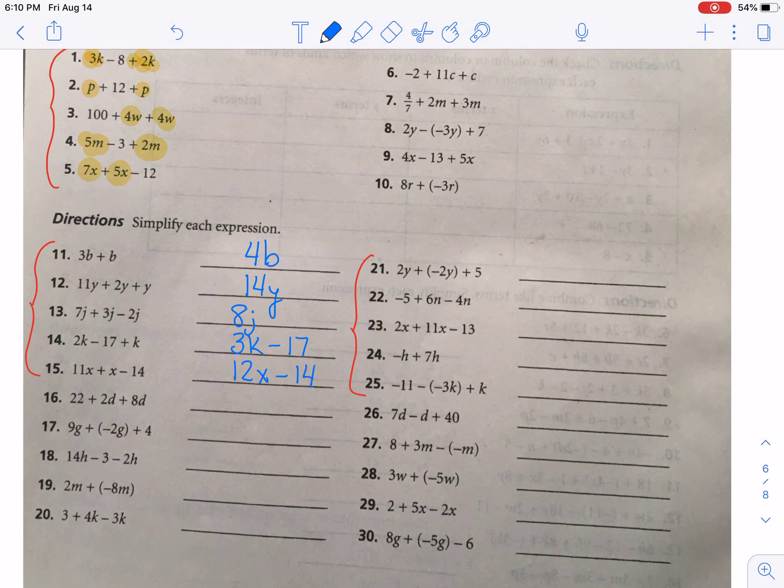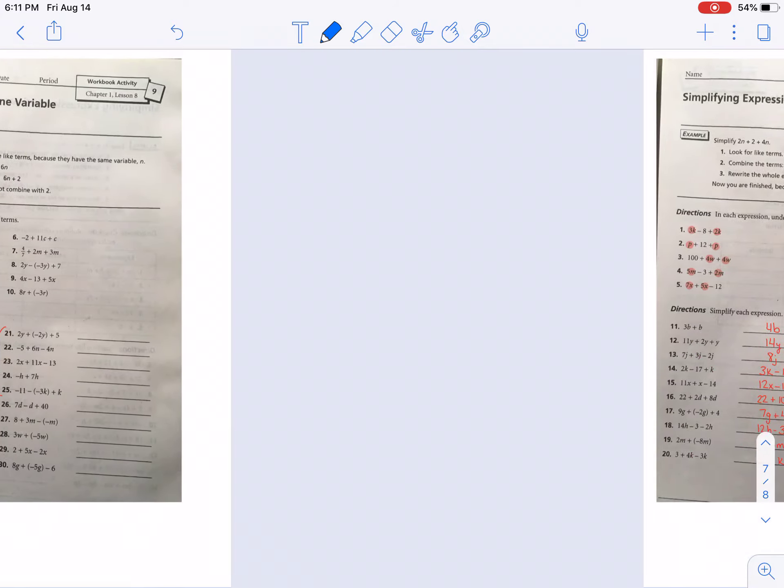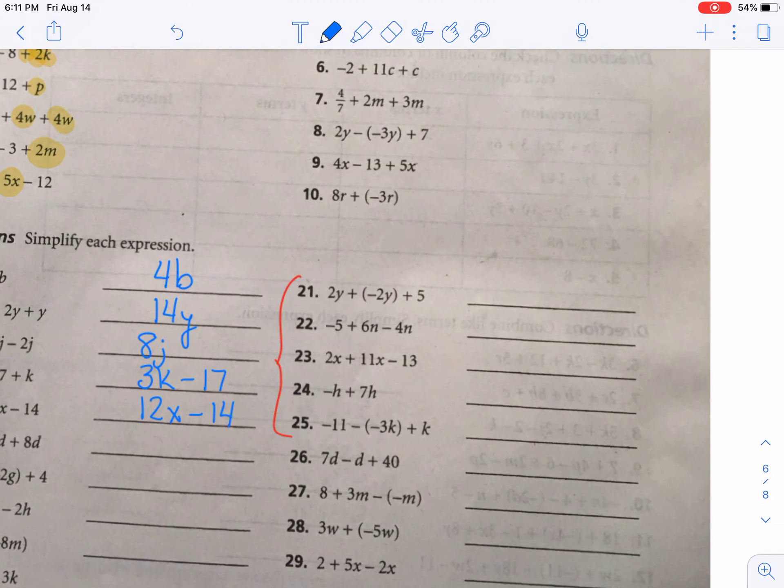Now, we're going to skip to the second column. We have 2y plus negative 2y and then plus 5. So the 2y minus 2y cancels. We don't have any y's. You can write 0y if you want to. I usually don't. So I just wouldn't write that at all. And then you would have the plus 5 would still be there. And you don't even need to write the plus sign. You can just write 5.